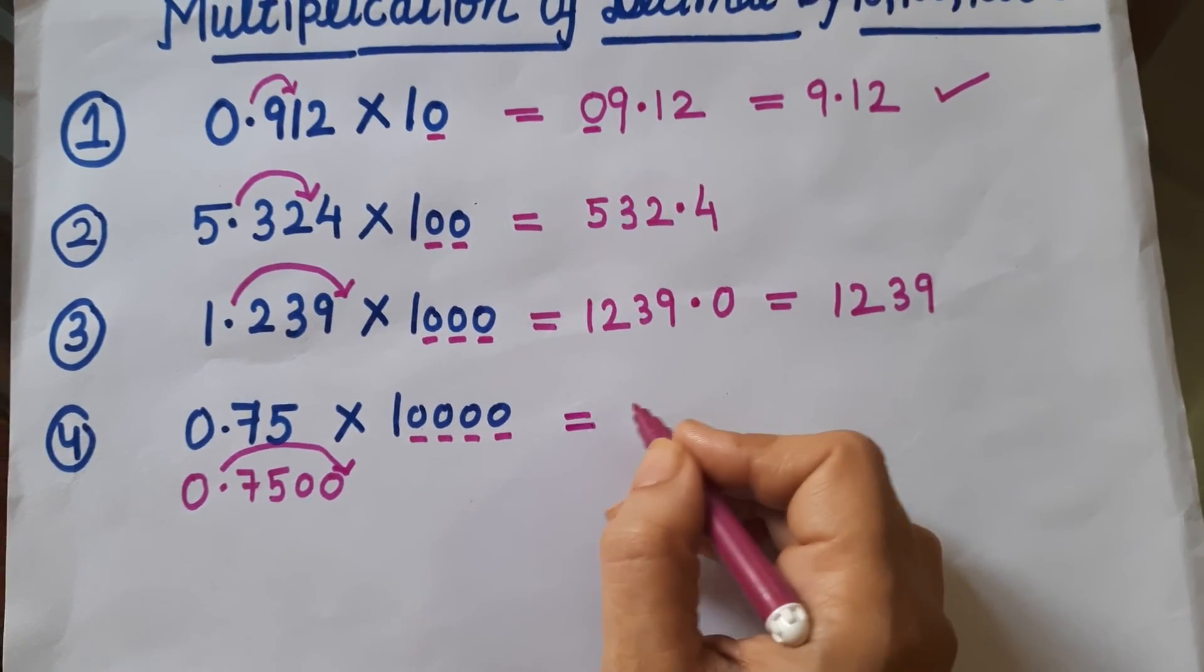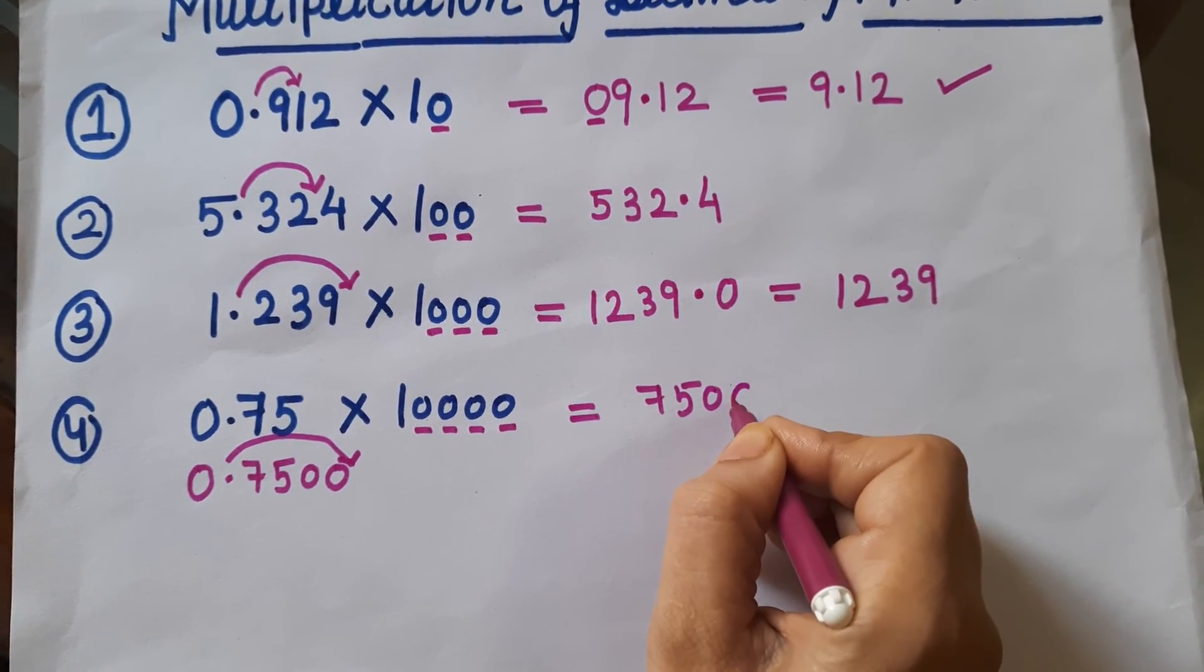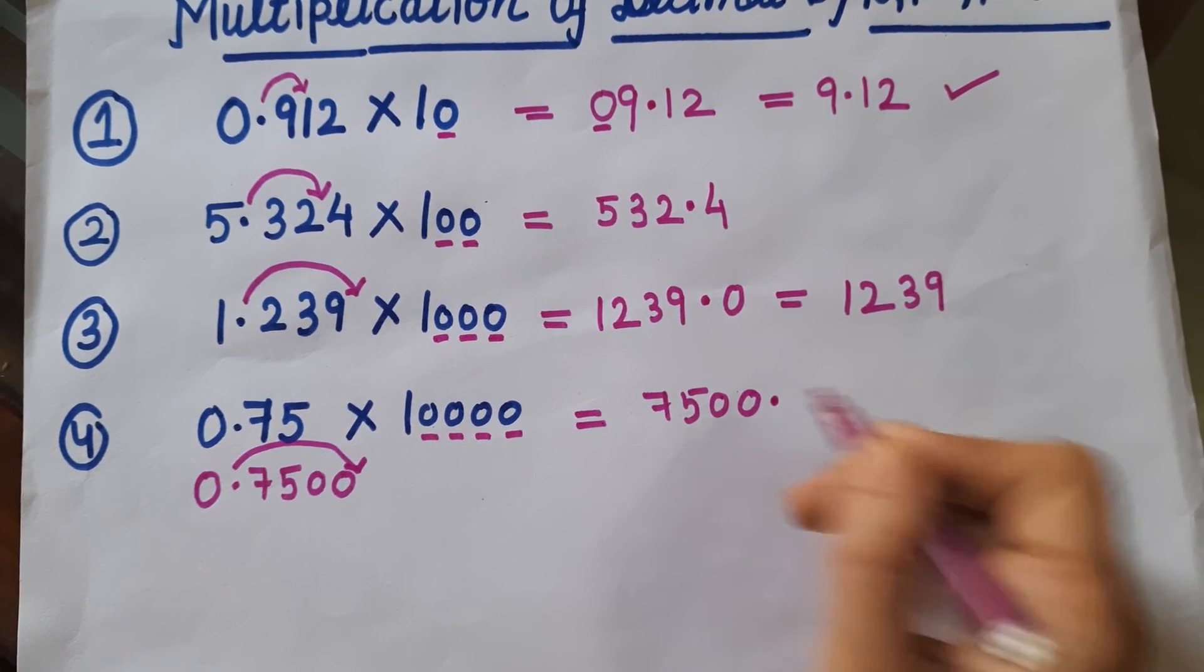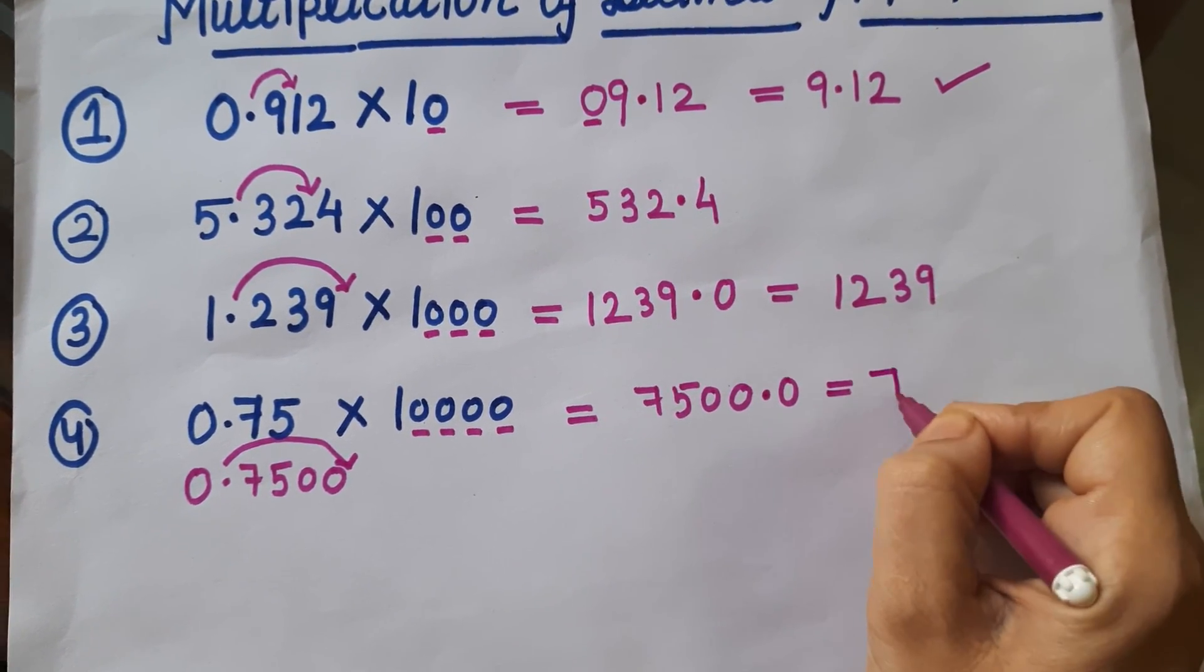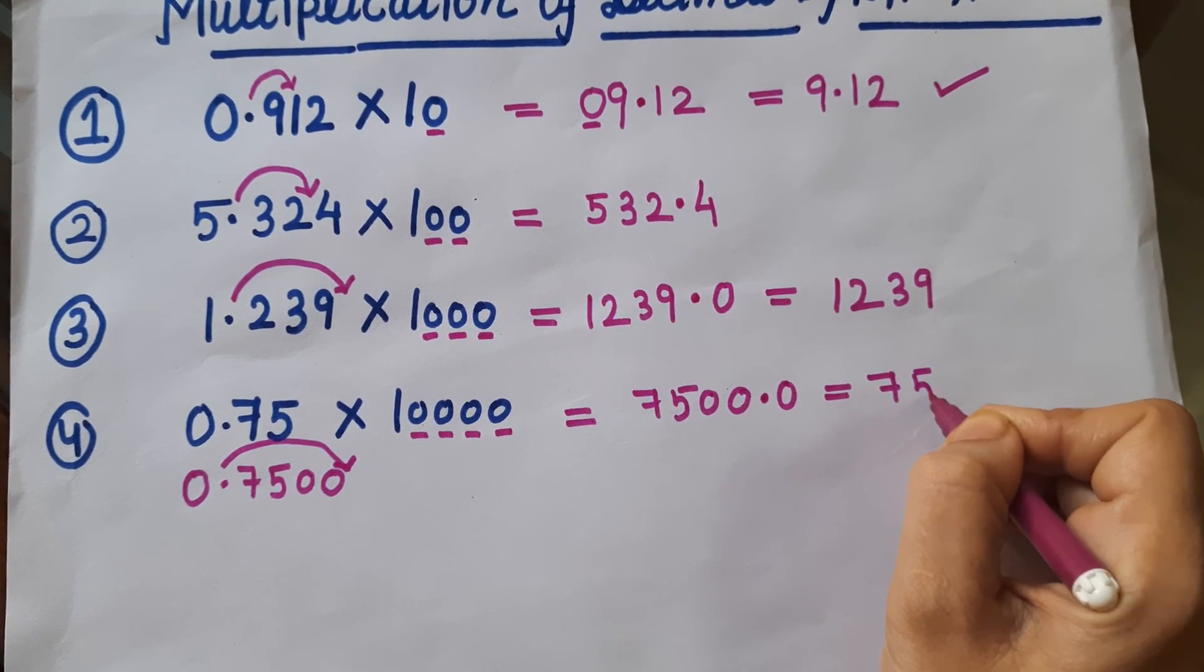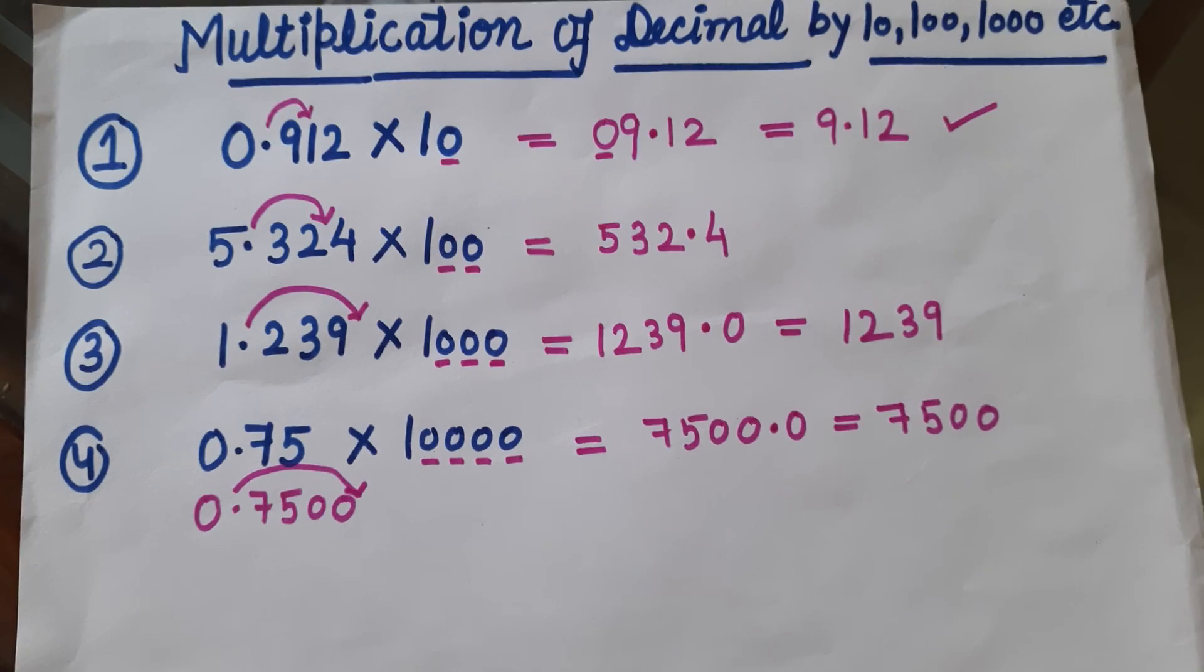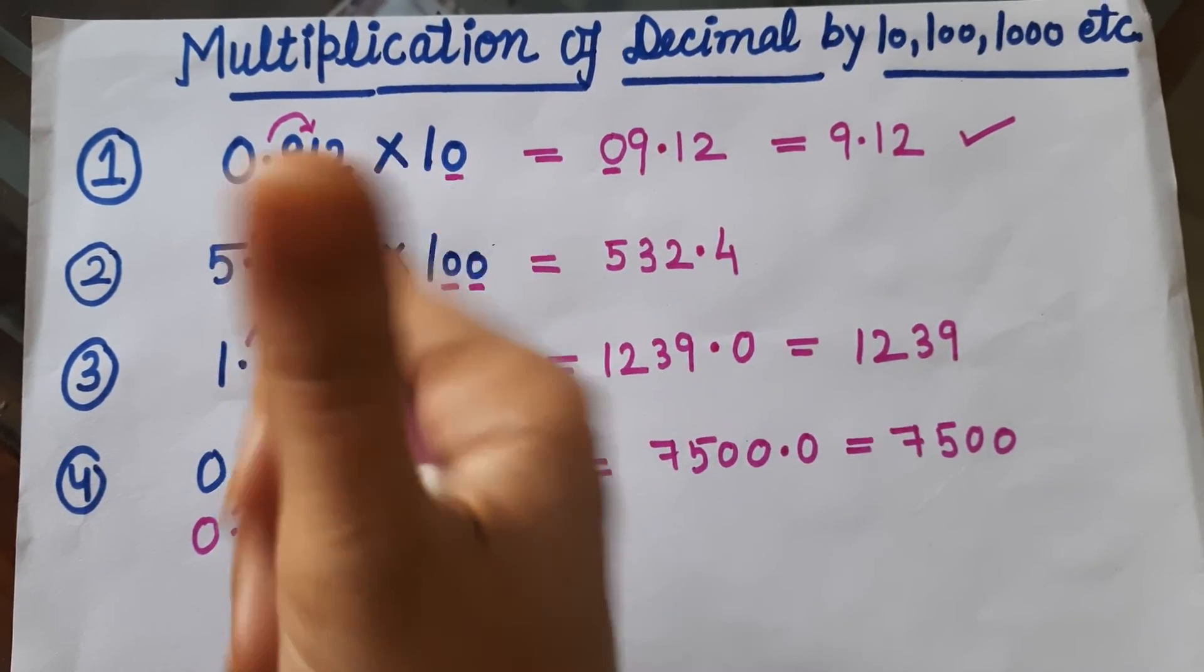So what will be the answer here? 7, 5, 0, 0. After that you can put the decimal and another 0, then the answer will become 7500. I think you got the concept. That is very easy. Thank you.